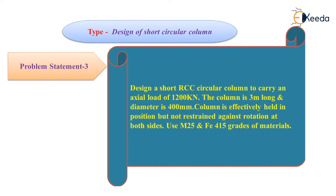Here is the problem statement. Design a short RCC circular column to carry an axial load of 1200 kN. The column is 3 m long and the diameter is 400 mm. The column is effectively held in position but not restrained against rotation at both ends. Use M25 concrete and Fe415 grade of steel.